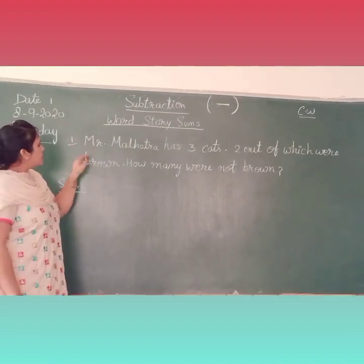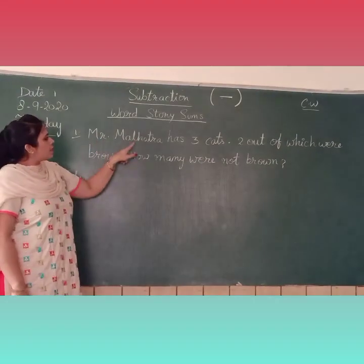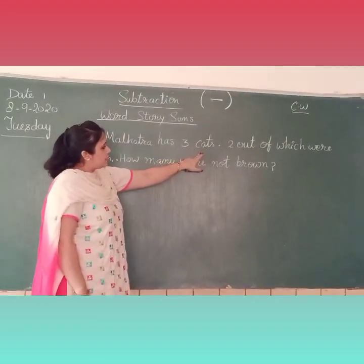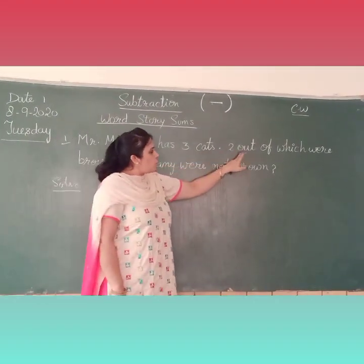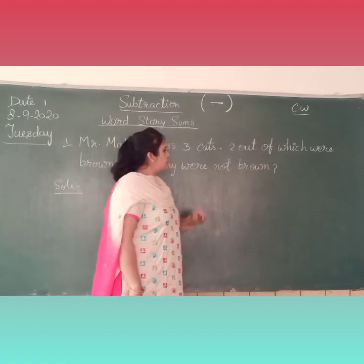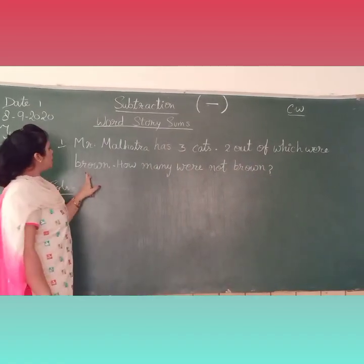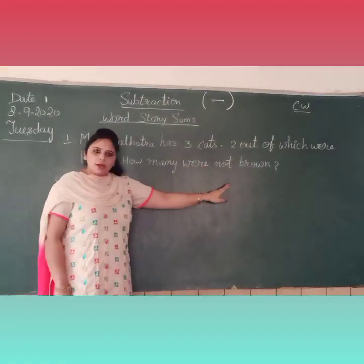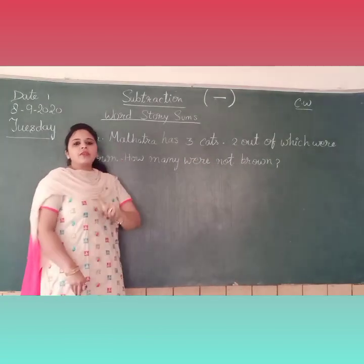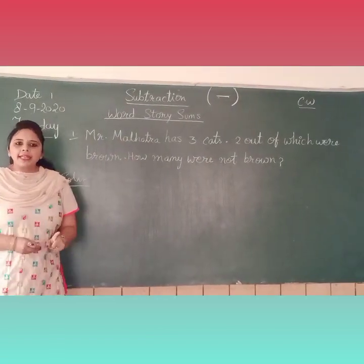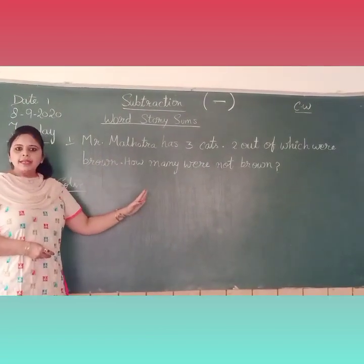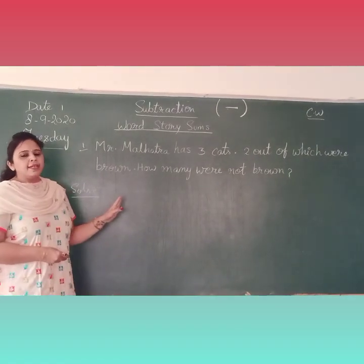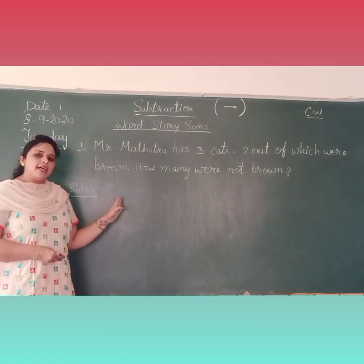The first sum is: Mr. Malhotra has 3 caps, 2 out of which were brown. How many were not brown? First you will read the question and then you will solve it. So let's start.